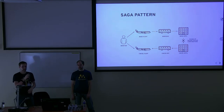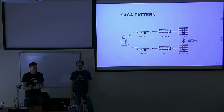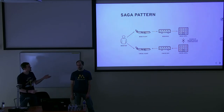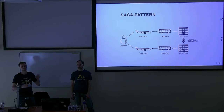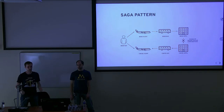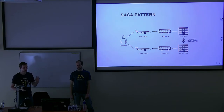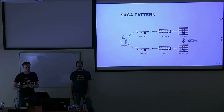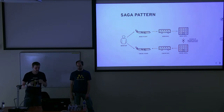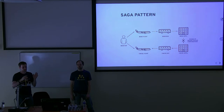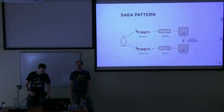Basically we attach to all these steps a procedure for how to undo the changes. For example, if we book a flight — success — then book a bus — success — then try to book a hotel and it fails because the hotel is full, we need to make the whole thing appear as if nothing ever happened. So we cancel the bus ticket and cancel the flight booking. The Saga pattern handles that for us — it tracks the state and tries to undo changes using these compensating procedures.